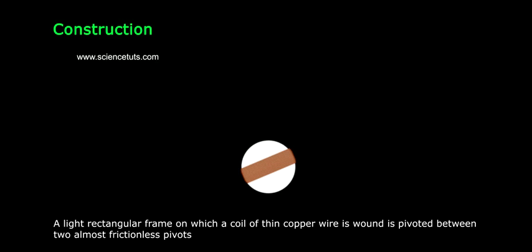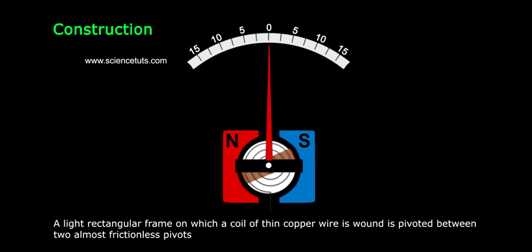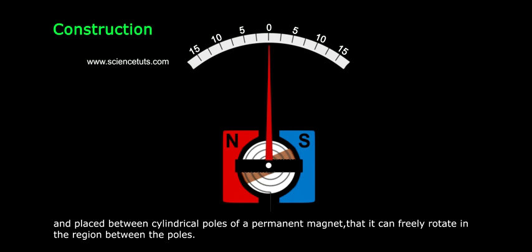Construction. A light rectangular frame on which a coil of thin copper wire is wound is pivoted between two almost frictionless pivots and placed between cylindrical poles of a permanent magnet so that it can freely rotate in the region between the poles.